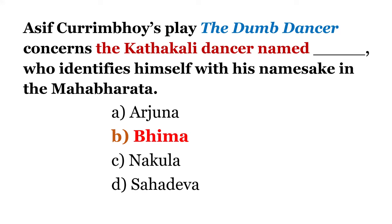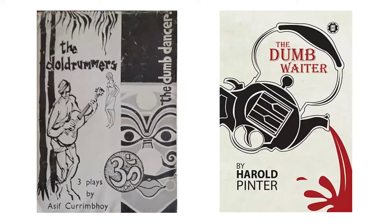Here you have learned something about Asif Currimbhoy's The Dumb Dancer. You can also make a list of other works by Asif Currimbhoy. For instance, there is a play called The Dumb Waiter by Harold Pinter — The Dumb Dancer by Currimbhoy and The Dumb Waiter by Harold Pinter. These are two different plays, but 'Dumb' is a commonality that helps you remember.